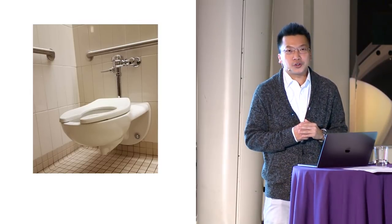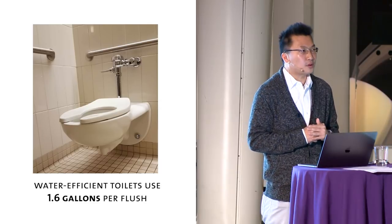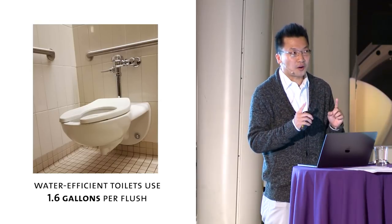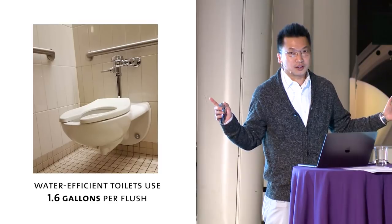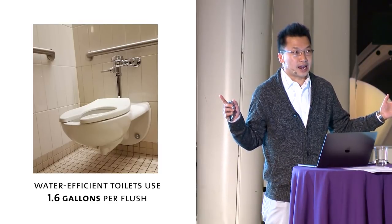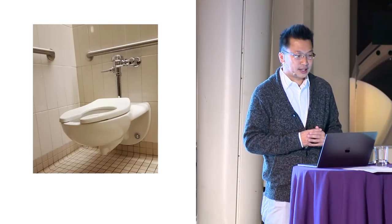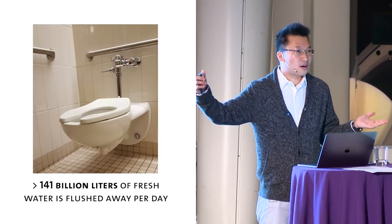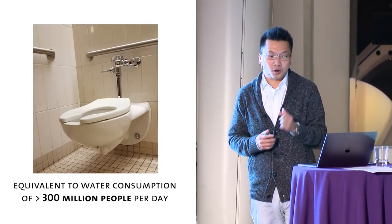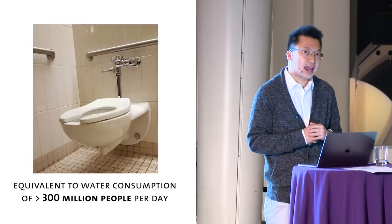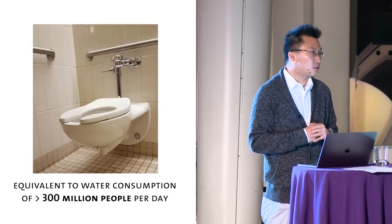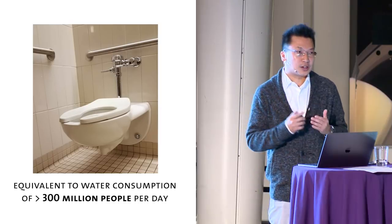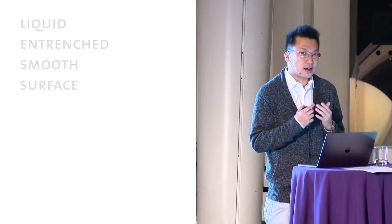Some of the most water efficient toilets we use in the United States take about 1.6 gallons per flush. Every one of us flushes a few times a day and now times this number to the global population. We flush a lot of water down the drain every day. And how much water we flush? It's over 141 billion liters of water. There's a lot of zeros to it but how much water is it? It's equivalent to the water consumption for over 300 million people per day. That's the population of the United States. So we flush a lot of water down the drain.